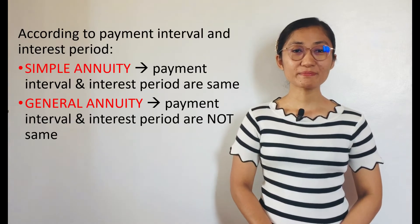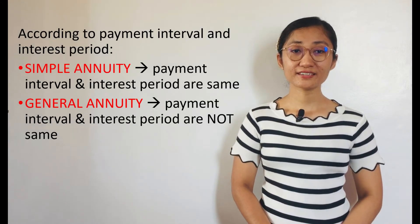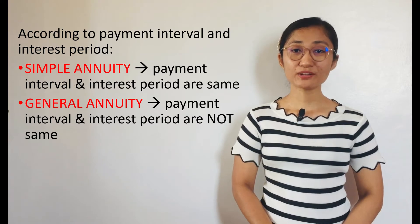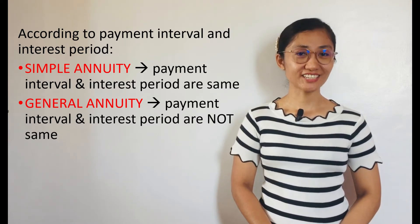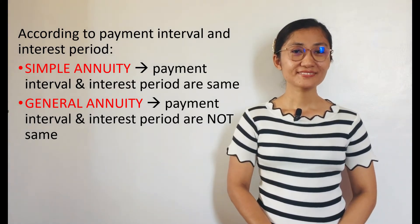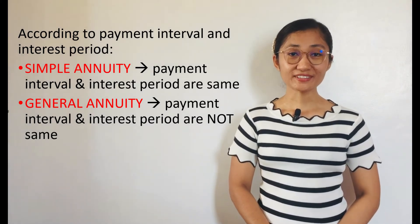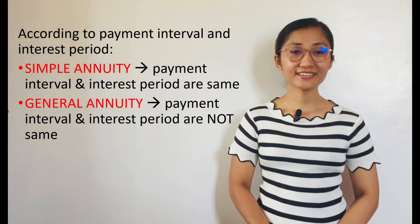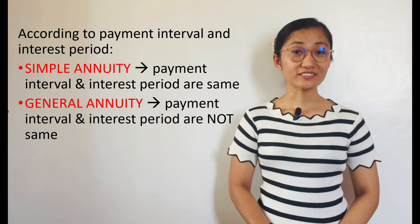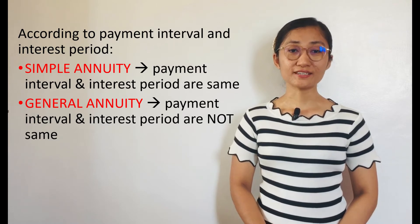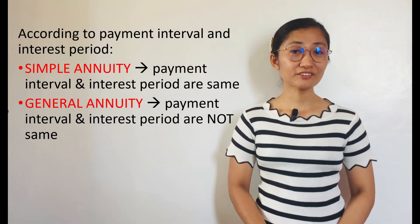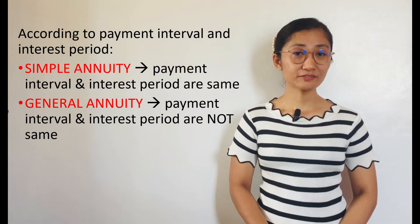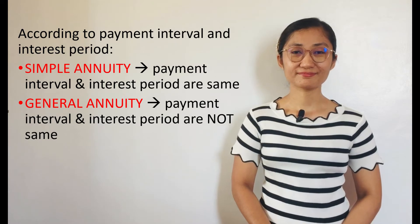Annuities may be classified according to payment interval and interest period as simple Annuity and general Annuity. Simple Annuity is an Annuity where the payment interval and interest period are the same, while general Annuity is an Annuity where the payment interval and interest period are not the same.